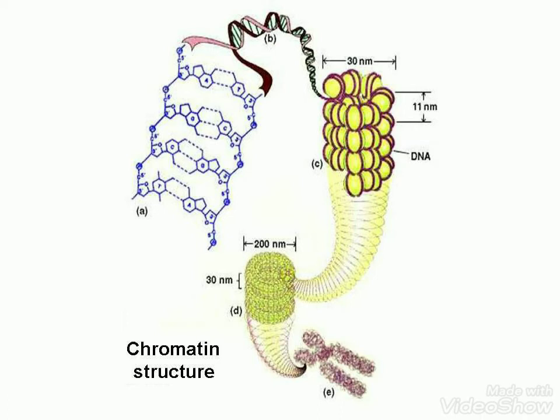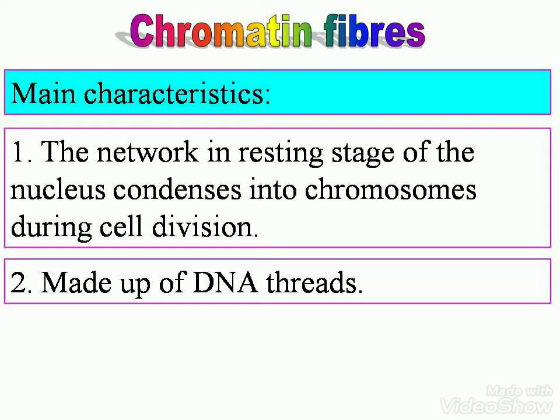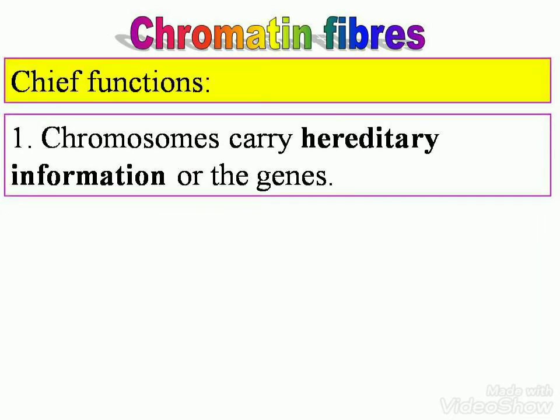Let's have a look at the chromatin structure — you'll understand why later on. Just have a glance at the entire structure and keep it in the back of your mind. There's DNA, and you can see the thickness and measurements. Chromatin fibers: in the resting stage of the nucleus they condense into chromosomes during cell division, and are made up of DNA threads. Chief function: chromosomes carry hereditary information — the genes.